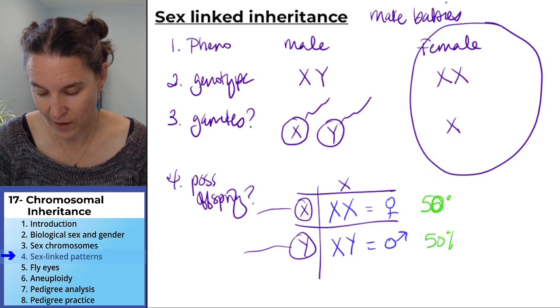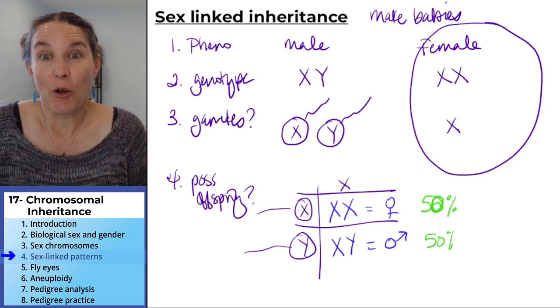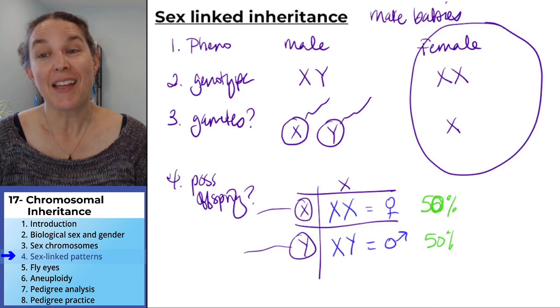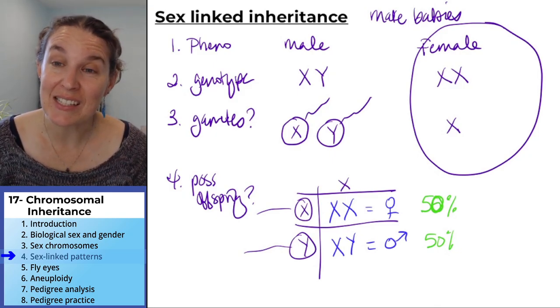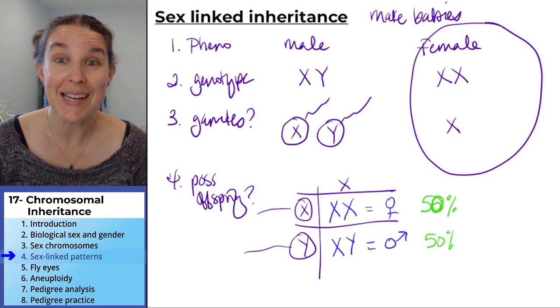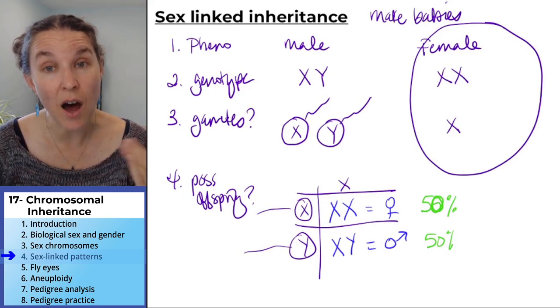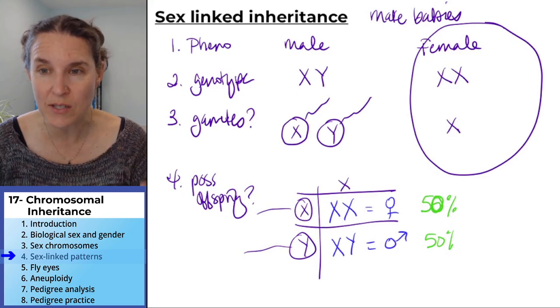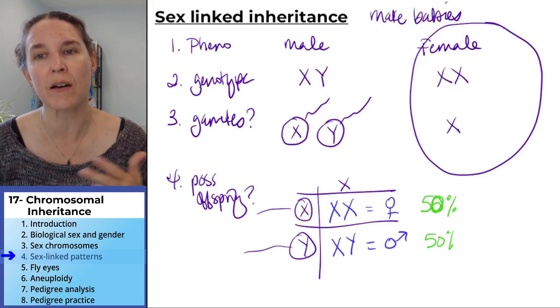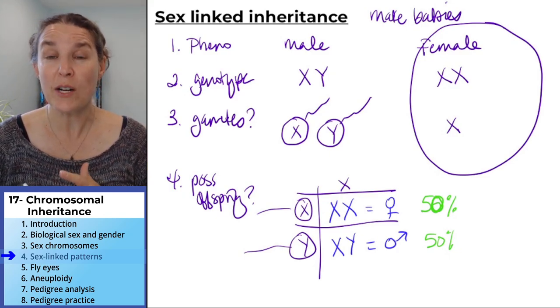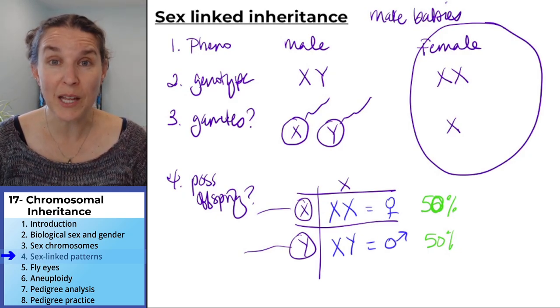Do you agree? There's a 50% chance of having an XY baby and a 50% chance of having an XX baby. Not a 55% chance. That's all there is to it. And it's that simple. Now, what if there's a condition on the chromosome? What if there's something that we want to keep track of on that chromosome? For example, colorblindness.